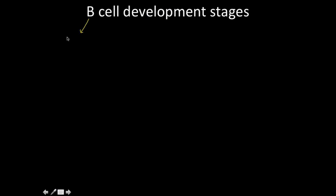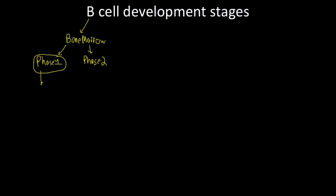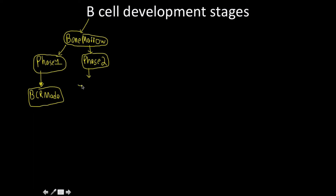The stages happening in the bone marrow consist of phase one and phase two. In phase one, the B cells are going to require a functional B cell receptor — so B cell receptors are being made. For phase two, this is the process of negative selection, where the only ones that survive are those that test negative, meaning we kill any self-reactive B cells.